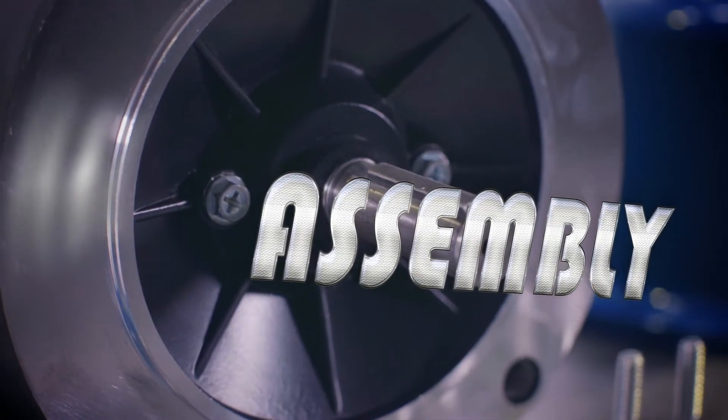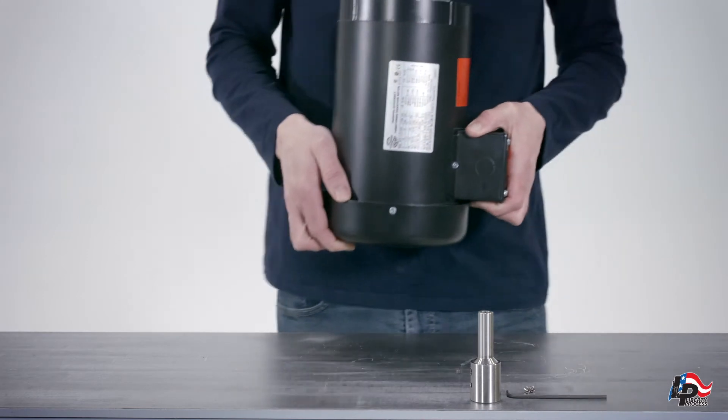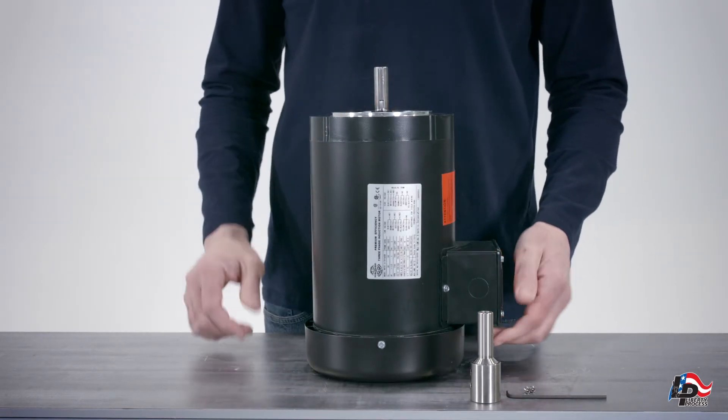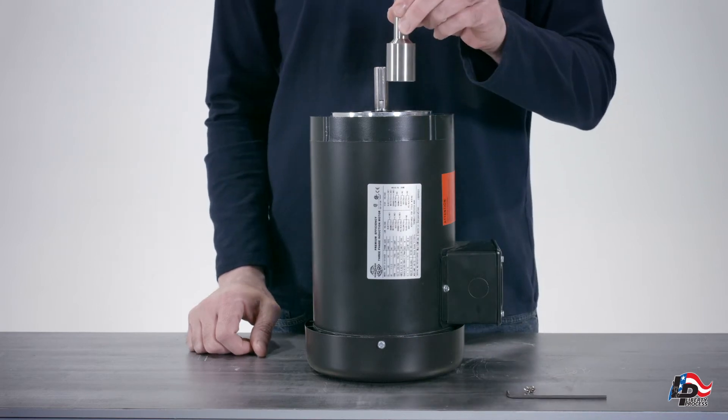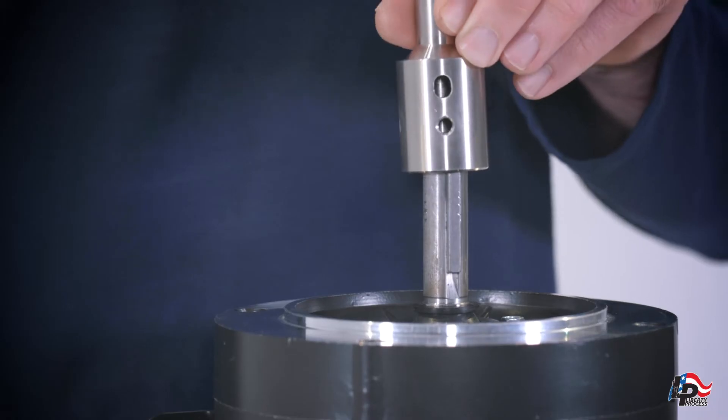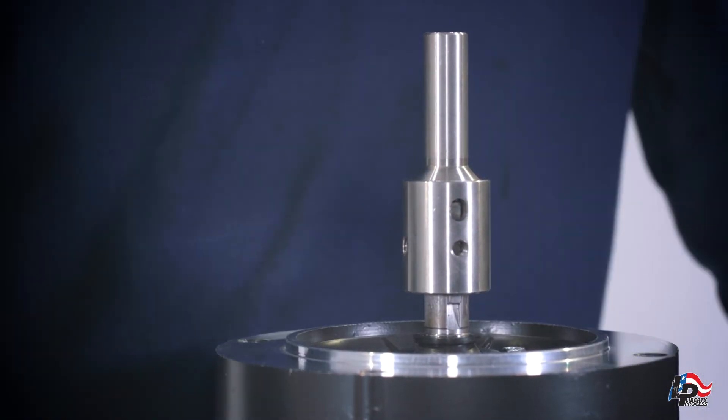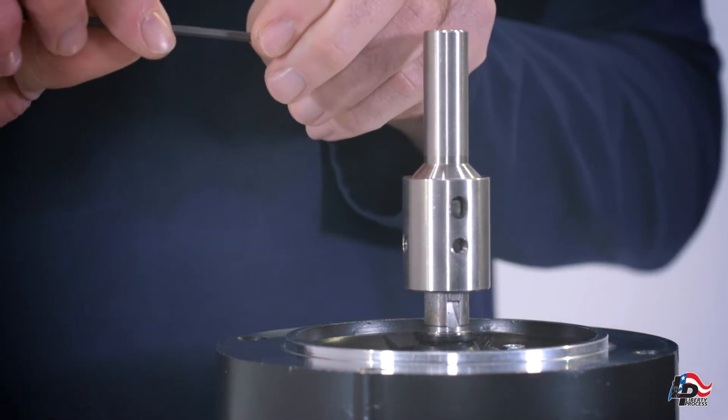Assembly of the APM22 pump. Make sure the pump motor is on the table and secure. Place the pump stub shaft on the motor shaft and seat. Tighten with 7-64-inch hex keys.